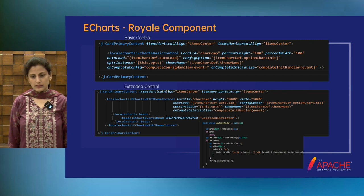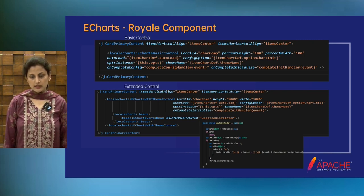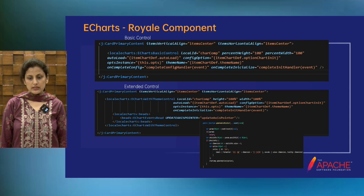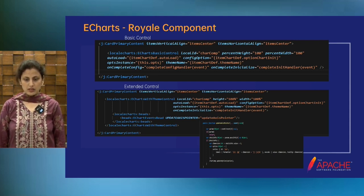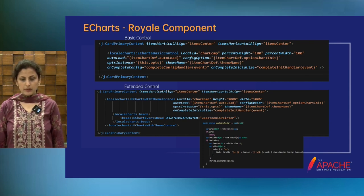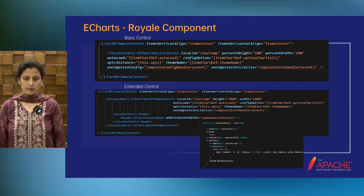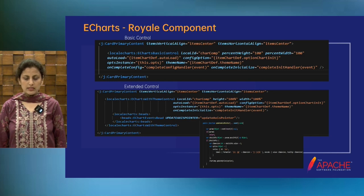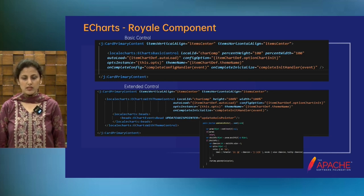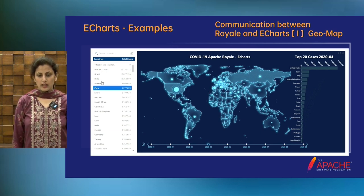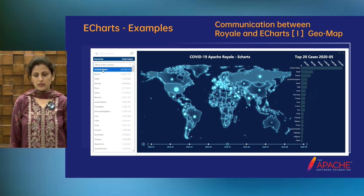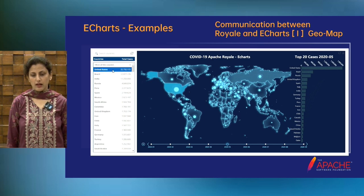These are the customized components created using the charts. If you see these components, they have some implementation for customization like updating the axis pointer. There is the beat created — the customized Royale beat — and all other instances refer to the same JavaScript code. This is also a dynamic eChart that is created in Royale.